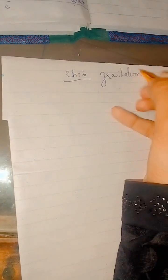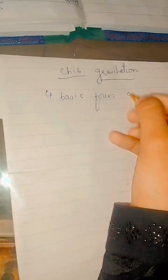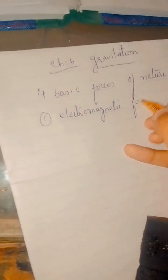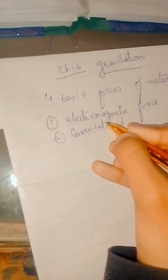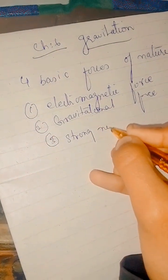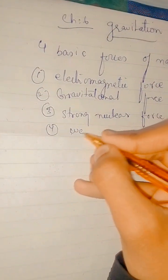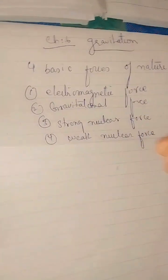Starting chapter number six, that is Gravitation. Now, let us talk about the introduction. There are four basic forces of nature. The first is electromagnetic force, the second is gravitational force, the third is strong nuclear force, and the fourth is weak nuclear force. These are the four basic forces of nature.